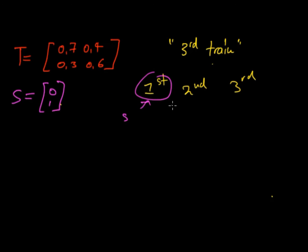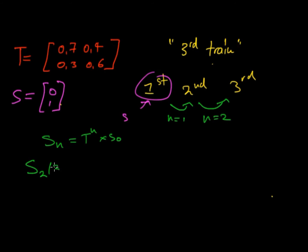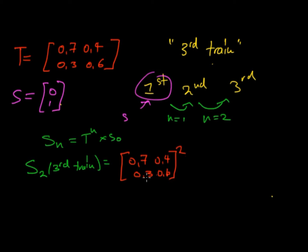We want the probability for the third train. The first train is the initial condition S₀, going to the second train is n equals 1, and from the second to the third is n equals 2. Using the formula Sₙ = Tⁿ × S₀, we get S₂ equals the transition matrix to the power of 2 times S₀. Subbing this into the calculator, we get 0.52 and 0.48.